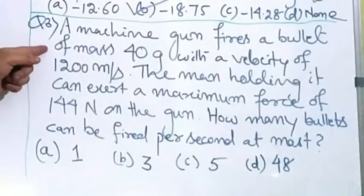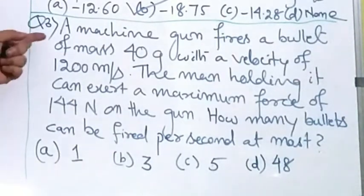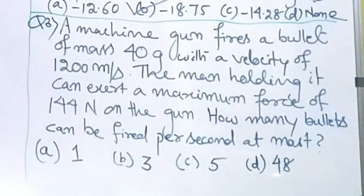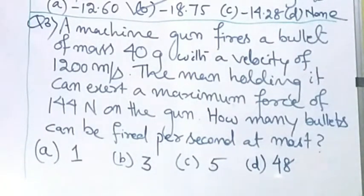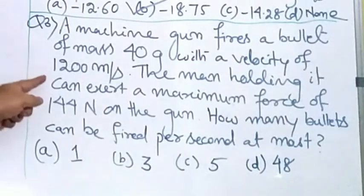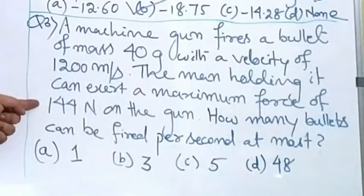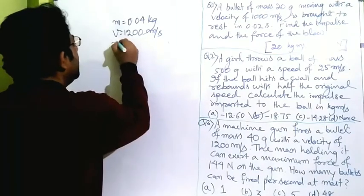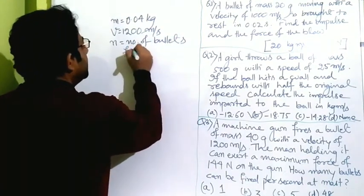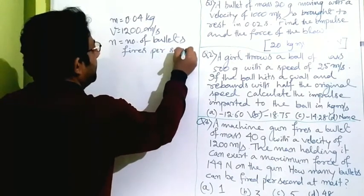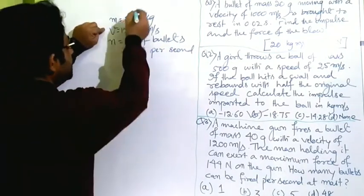The third question: a machine gun fires a bullet of mass 40 grams with a velocity of 1200 meters per second. The man holding it can exert a maximum force of 144 newton on the gun. How many bullets can be fired per second? Mass equals 40 grams, or 0.04 kg. Velocity V equals 1200 meters per second. Let n be the number of bullets fired per second.